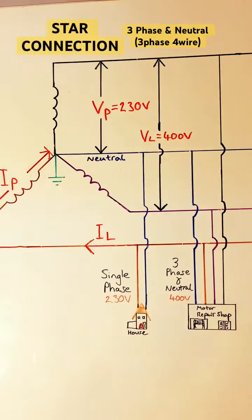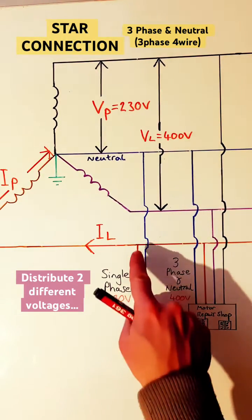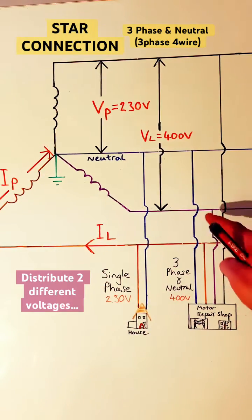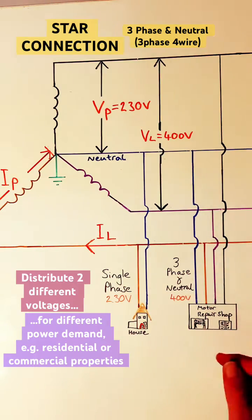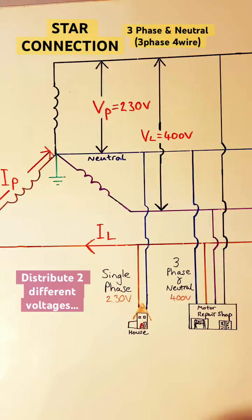A main advantage of the star connected system is it allows us to have two voltages. A single phase connection can be made bringing one line and a neutral into a house for example, or a connection from all three phases and a neutral into a motor repair shop somewhere commercial. Different supplies for different demands.